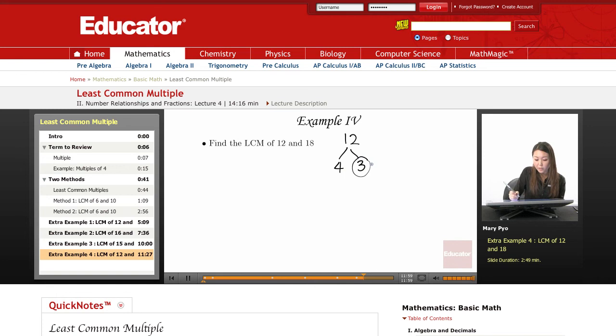This is a prime number, so I'm going to circle this. For the 4, break this up into 2 and 2. They're both prime, so I'm going to circle them.